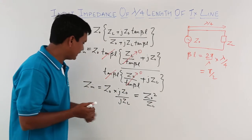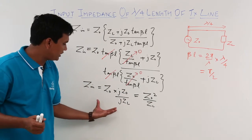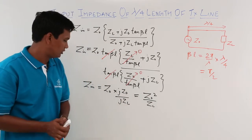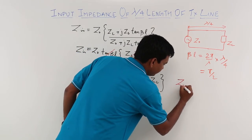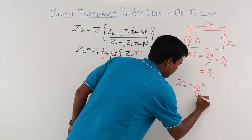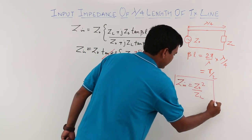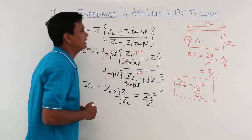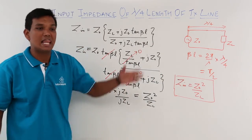This is a very interesting equation which will be very common in solving a numerical. What we have concluded is zin will be z0 square by zl. This is your input impedance when the length of the transmission line is lambda by 4.